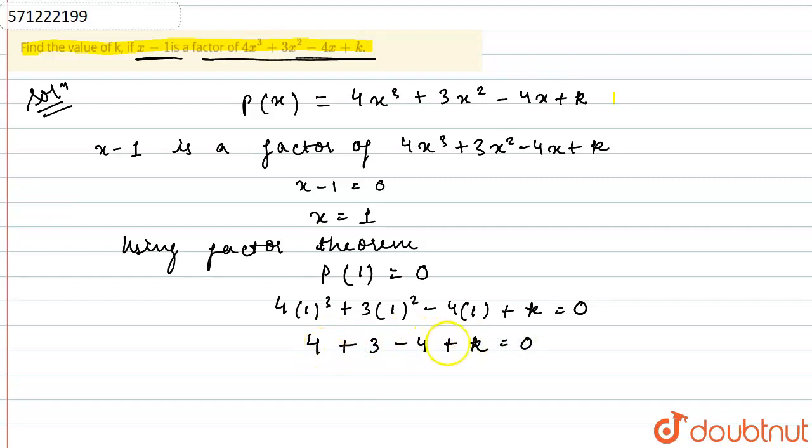The 4 and minus 4 cancel, so I'm left with 3 plus k equals 0, or k equals minus 3.